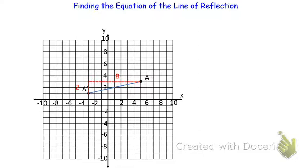Instead of rising 2, if we went half as much up, it would be 1 up. And instead of going 8 to the right, we'd go 4 to the side. We can also go from A' and do the same thing — go down 1 and 4 to the left. The midpoint is in between. Notice that the two right triangles we drew are congruent: they both have a vertical leg of 1, a horizontal leg of 4, and by the Pythagorean Theorem their hypotenuse would be equal. That's how we know this really is the midpoint — they're the same distance from A and A'.